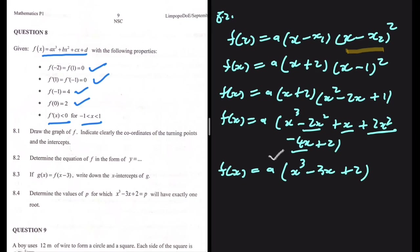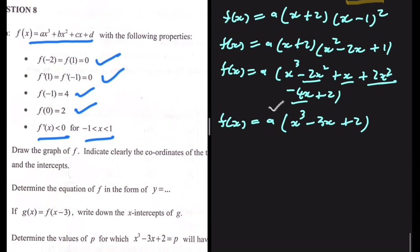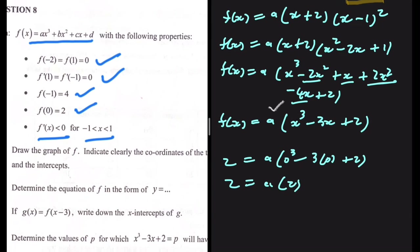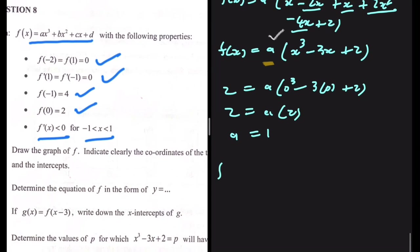We just need to find the value of a. We can substitute a known coordinate into the equation. We know f(0) = 2, so: 2 = a(0³ - 3(0) + 2), which gives 2 = a(2), so a = 1. Substituting back, f(x) = x³ - 3x + 2. This is our equation.